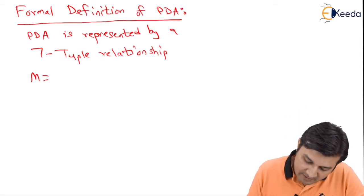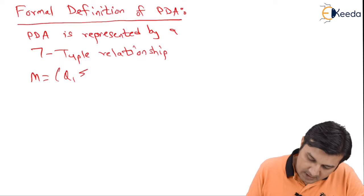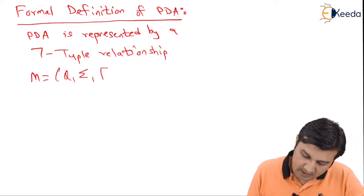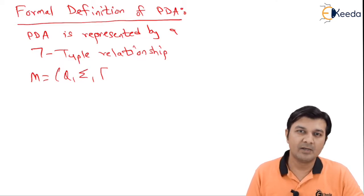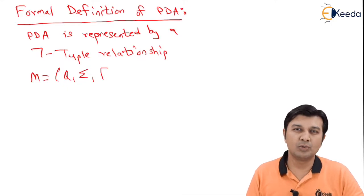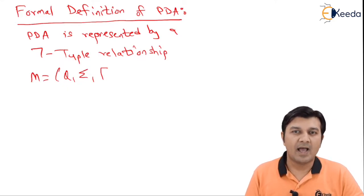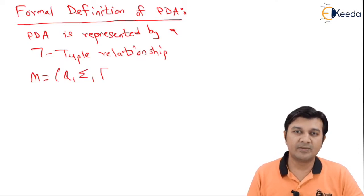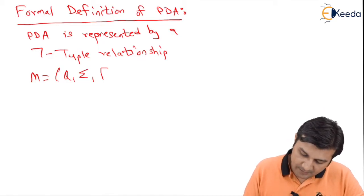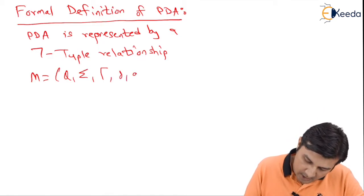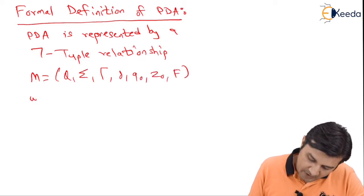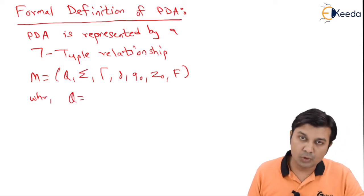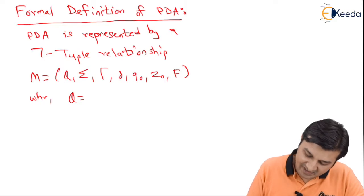It is defined as M = (Q, Σ, Γ, δ, Q0, Z0, F), where Γ is a special alphabet — a Greek alphabet used in automata theory. Just understand the definition and use it. Q is going to be the finite set of states.